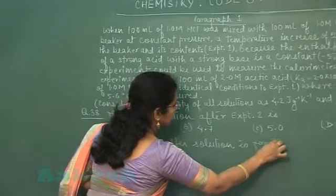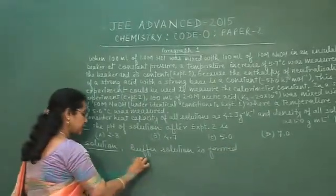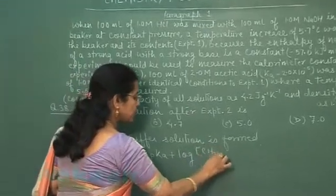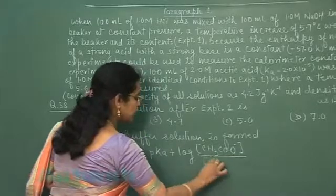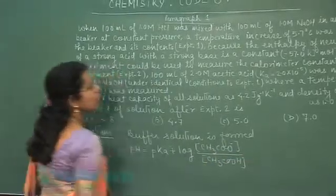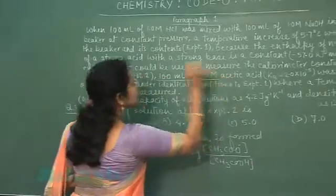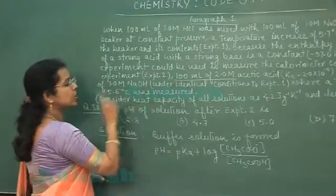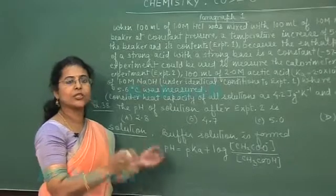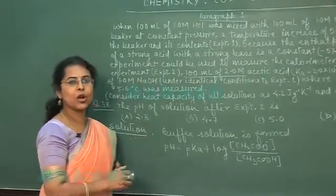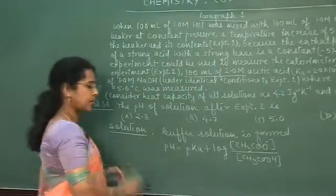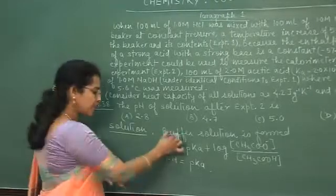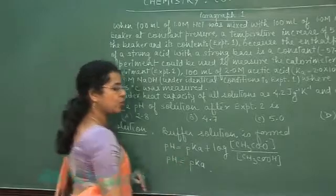Solution is formed and this buffer is acidic buffer. pH of this acidic buffer will be equal to pKa plus log concentration of salt by concentration of acid. According to the information given, 100 milliliter of 2 molar acetic acid, it means 0.2 mole acid is taken which is neutralized with 0.1 mole NaOH. That will result in the formation of 0.1 mole salt and 0.1 mole acid remains unreacted. So here we can see the buffer solution.